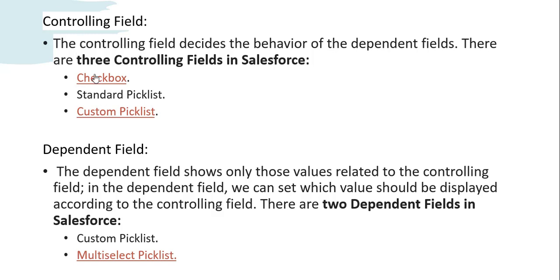The controlling field decides the behavior of dependent fields. There are three controlling field types in Salesforce: checkbox, standard picklist, and custom picklist. The dependent picklist shows only those values related to the controlling field. In the dependent field, we can set which value should display according to the controlling field. There are two dependent field types in Salesforce: custom picklist and multi-select picklist.